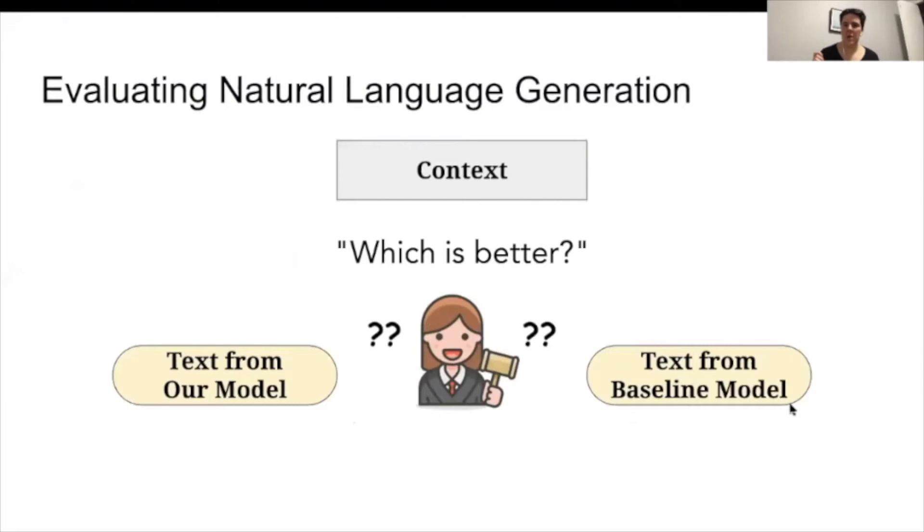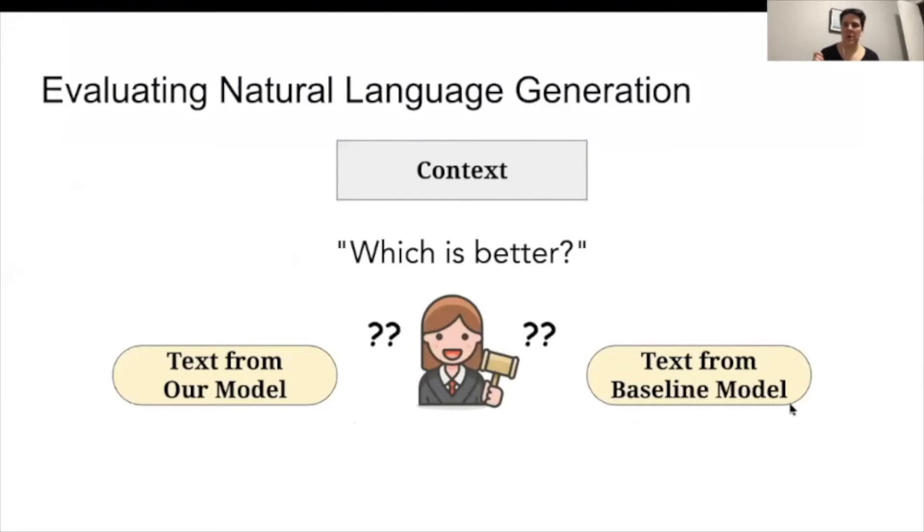So to motivate this a little bit, in NLP we have this task called natural language generation, where we ask models to generate natural language text. And when we want to check how much progress we've made in this task, we typically set up an evaluation that goes something like this. We have some underlying textual context, so some block of text that we then provide to two different models, one of which is our proposed new model, and one of which is a baseline model, so some pre-existing model usually.